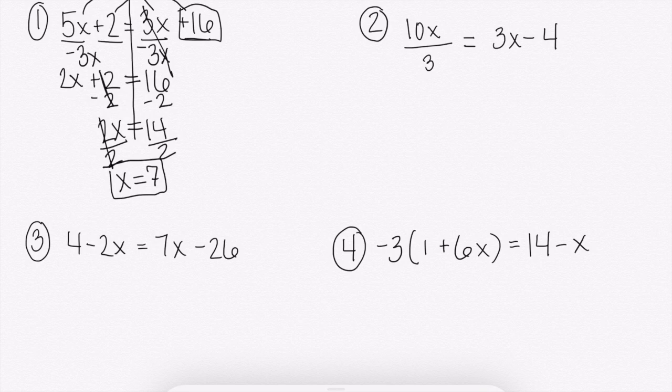Just like one step and two step equations, you can check your answers to guarantee you get every single one of these right. You're just going to have to plug your x in to multiple spots. So we're going to rewrite the equation. So 5, but then instead of x, we're going to replace it with 7 because that's what we think it is.